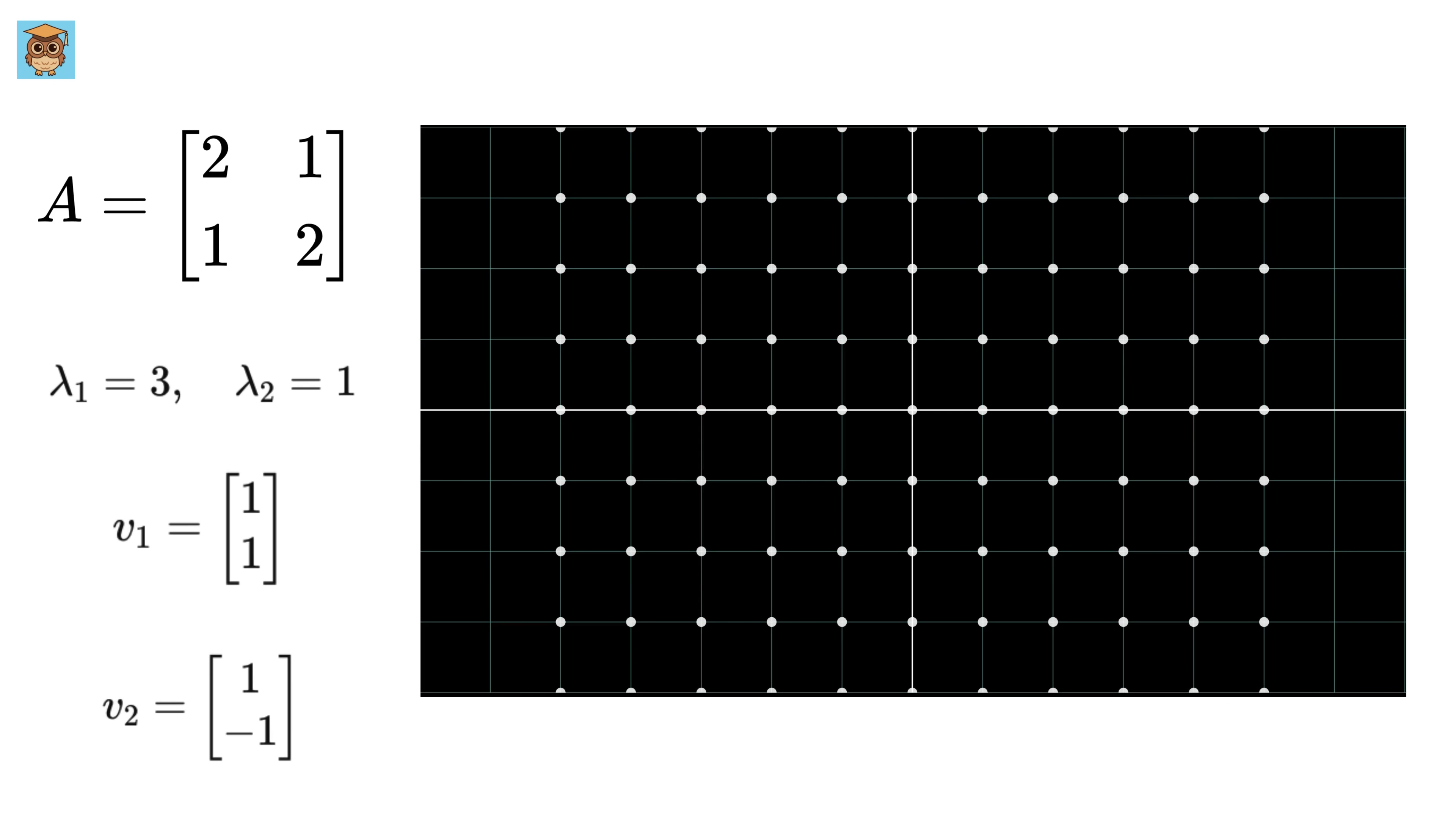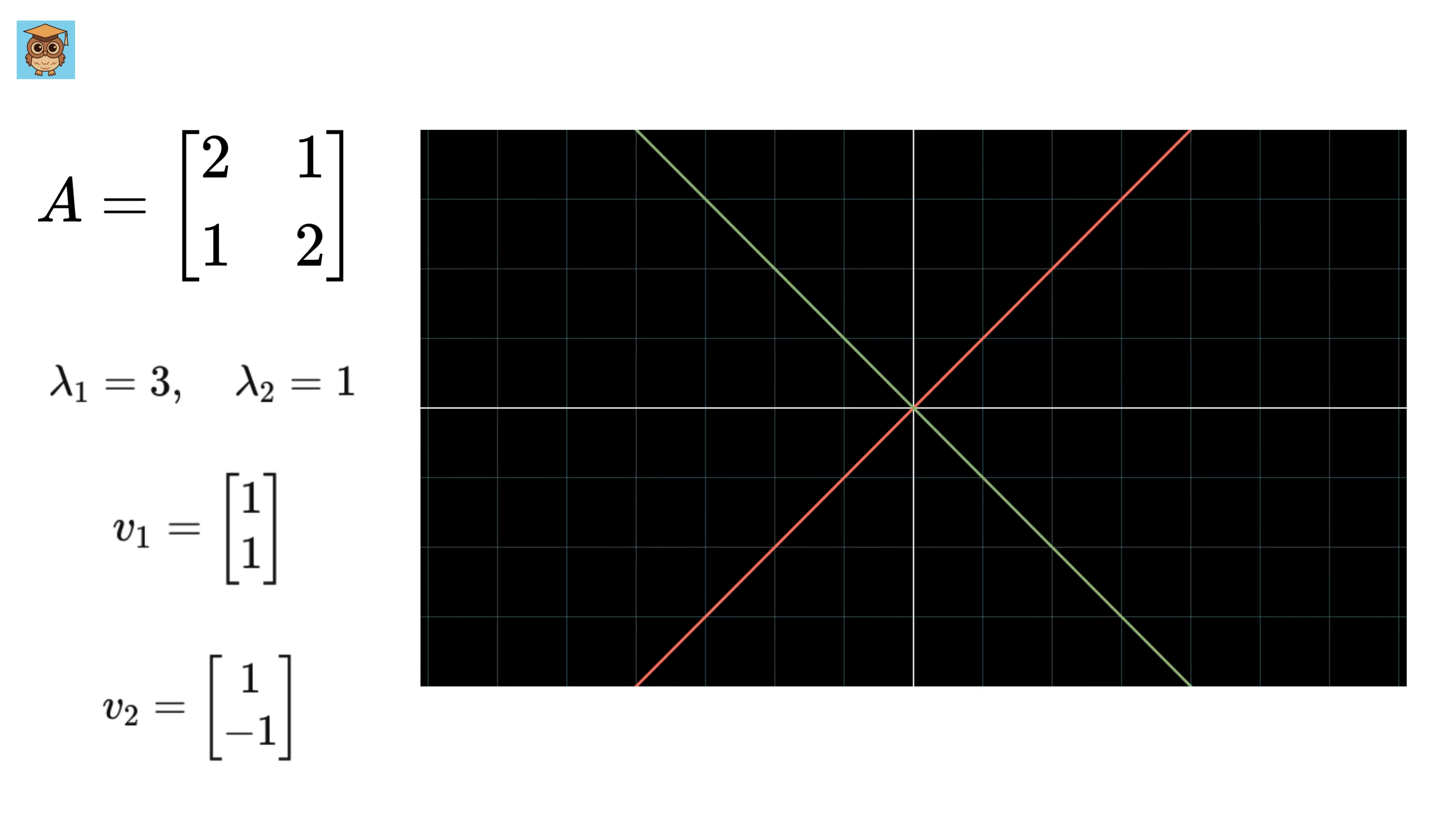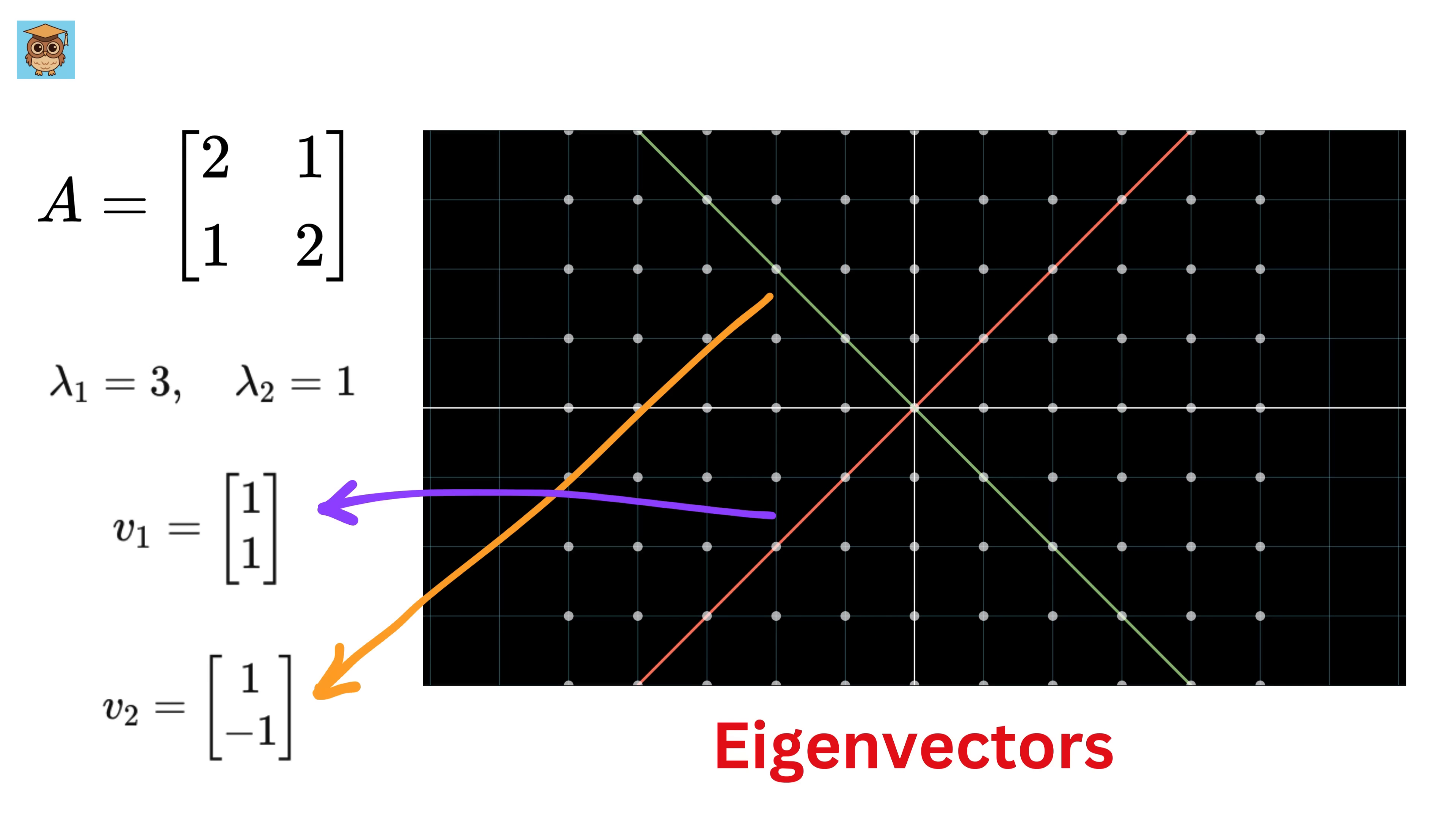Now here comes the magic. This time, just observe all of the points along this line. The vectors along this line do not rotate at all. They only get longer or shorter. Such lines where the vectors do not rotate but only get scaled are called eigenvectors. So these two lines are the eigenvectors of this matrix.